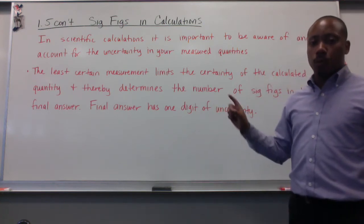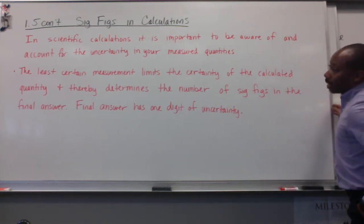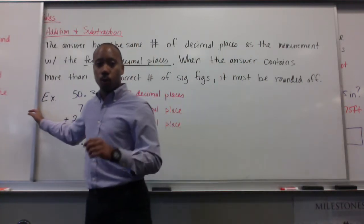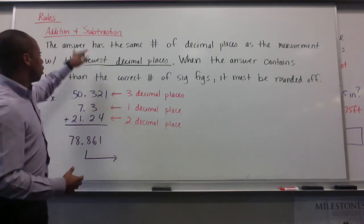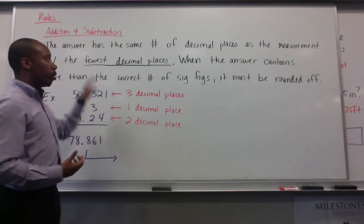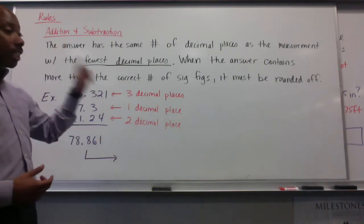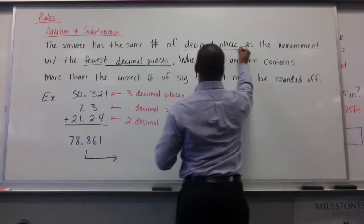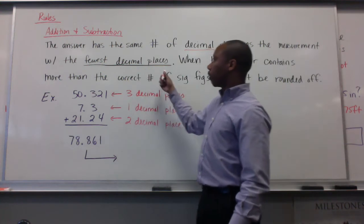Your final answer has one digit of uncertainty. When accounting for significant figures in your calculations, there are some rules. The rules differ depending on what operations you are doing. For addition and subtraction, the answer has the same number of decimal places as the measurement with the fewest decimal places.